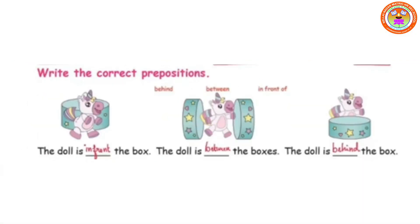Understand, students? Next exercise. Write the correct prepositions. Three options are given: behind, between, and in front of. See the first picture — the doll is in front of the box. See the second picture — the doll is between the boxes. See the third picture — the doll is behind the box.